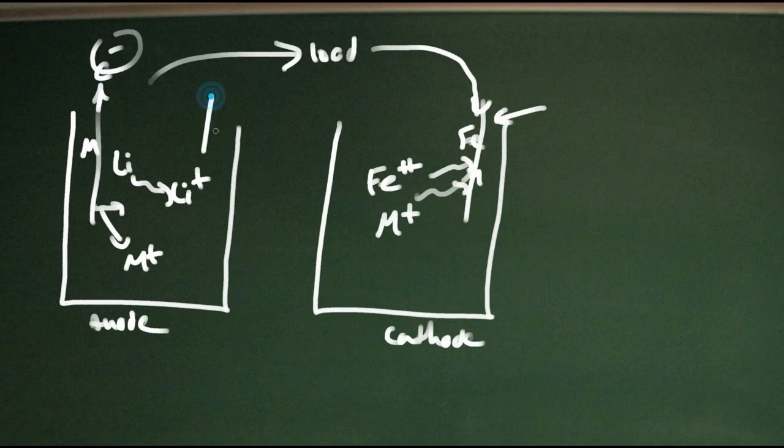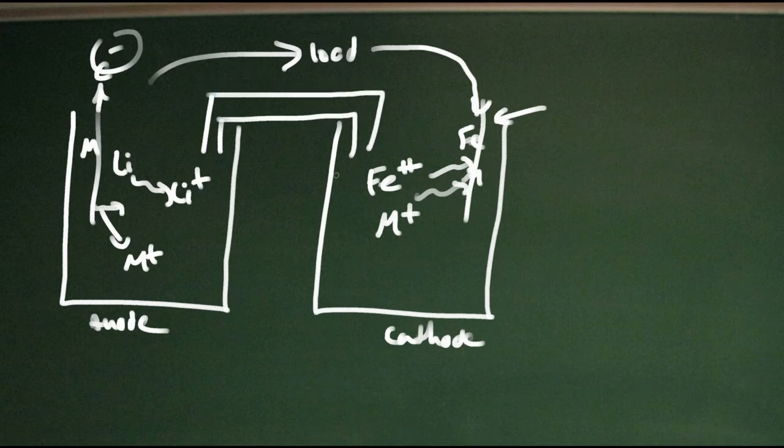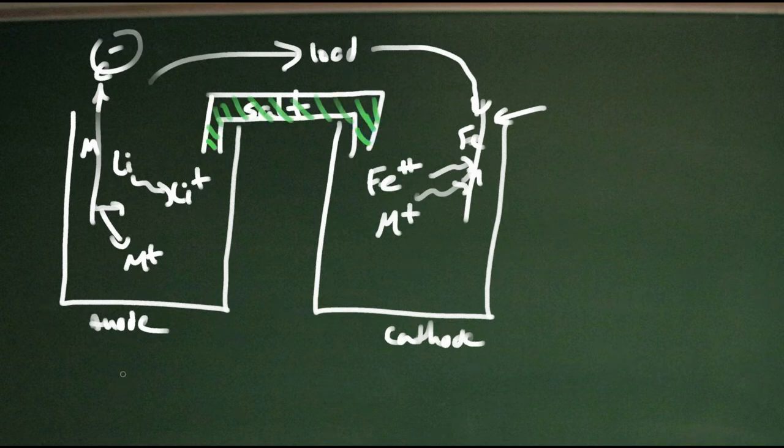So we need some way to move charges to balance out that negative, but we don't want electrons to be able to get through and cheat and not go through our load. So we have some salt bridge that is between them. I'm going to color that some other color just for clarity here. So there's your basic electrochemical cell.